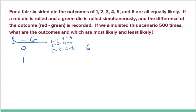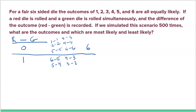The difference could also be one. What would have to happen for red minus green to equal one? We could have six minus five, five minus four, four minus three, three minus two, and two minus one — five different ways. I can't do one minus zero because the green die can't be zero.